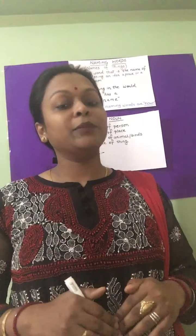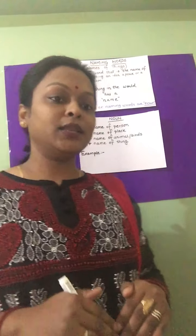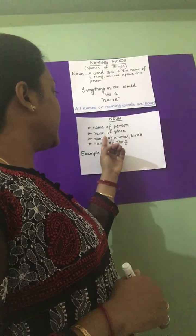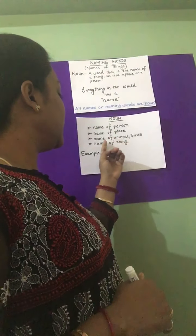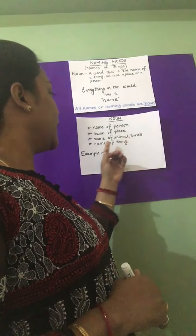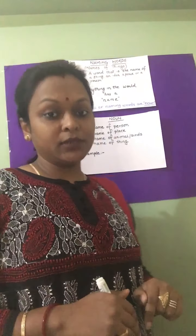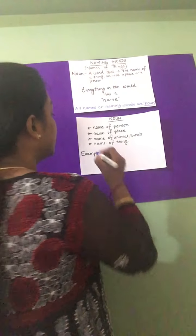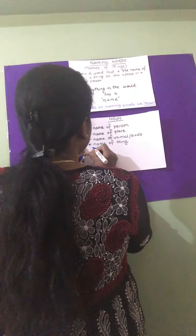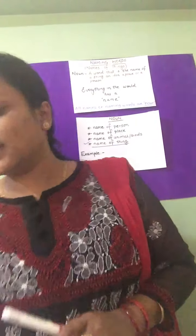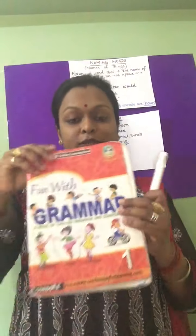All the naming words are nouns. The name of a person, place, animal, bird, or thing is a noun. But in this chapter we will deal with the name of things.